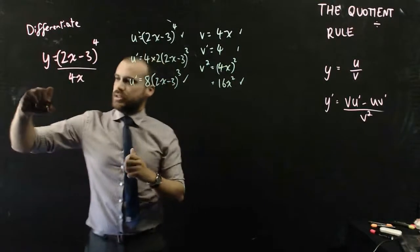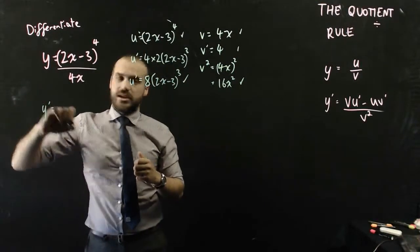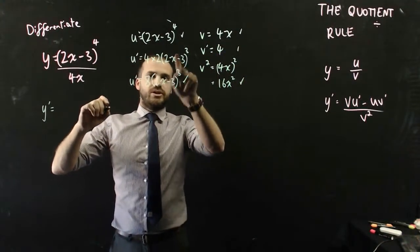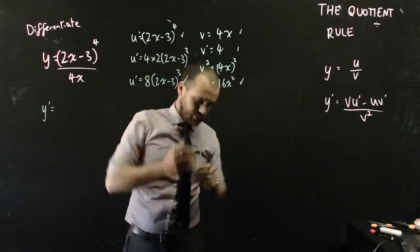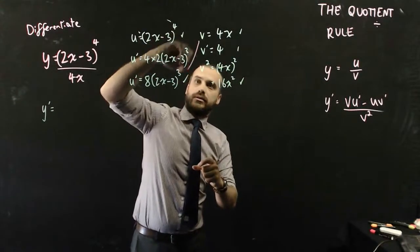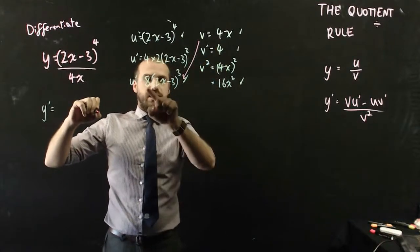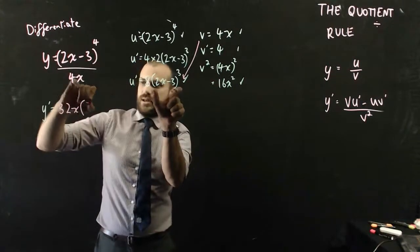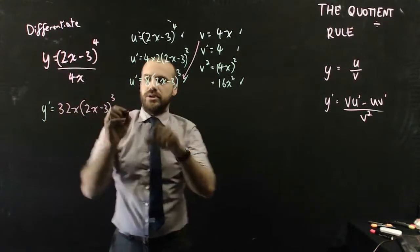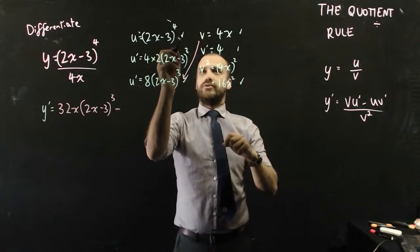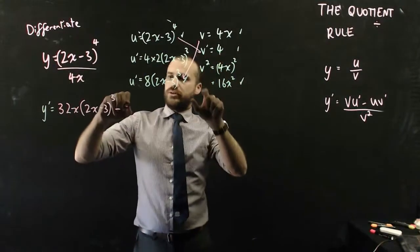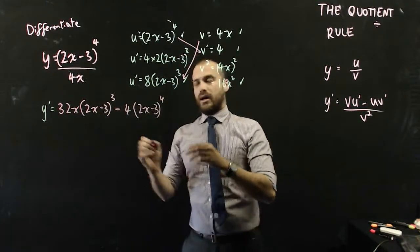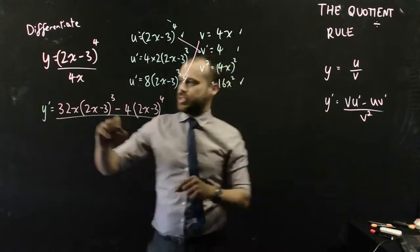I can put it all together and say that y dash is equal to, and I always have to do this in the right order, it's the bottom thing first, so v, u dash. So, it's 4x times 8, so that's 32x bracket, this thing, (2x minus 3) cubed, minus u v dash, so 4 times (2x minus 3) to the 4, all over v squared, which is 16x squared.